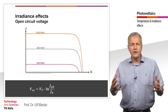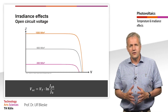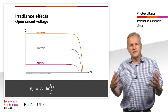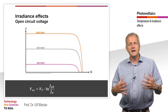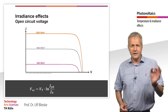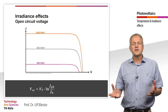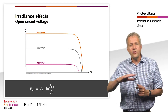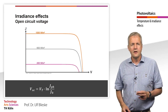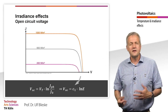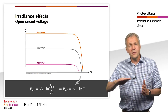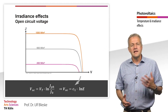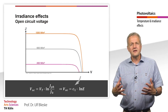We assume that only the irradiance changes, not the temperature. The temperature voltage and the reverse saturation current density are not influenced by the irradiance. The photocurrent, however, as we have just seen, is proportional to the irradiance. For the open-circuit voltage, therefore, there is a logarithmic dependence on the irradiance, which we represent here with the constant C1.